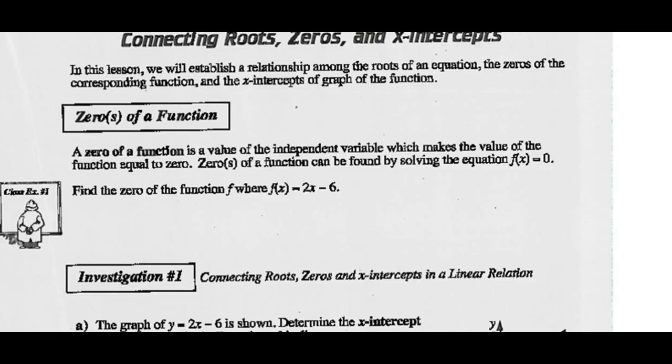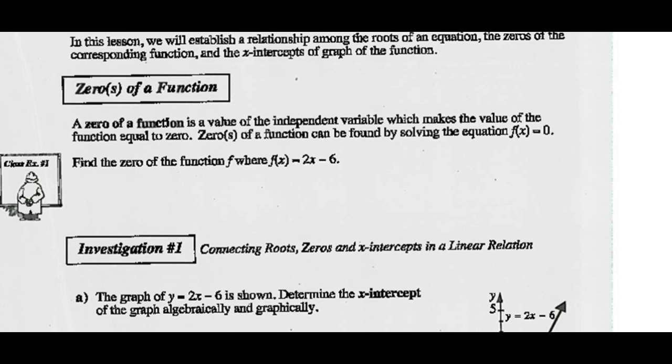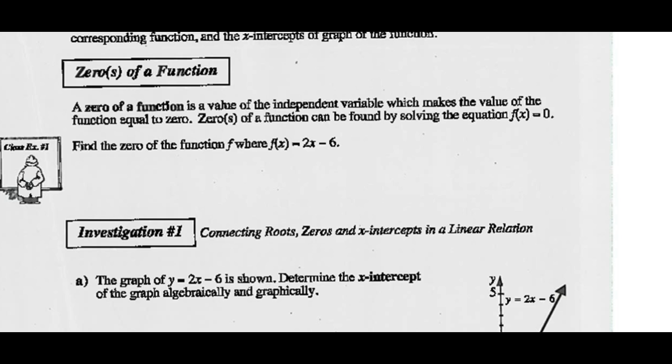So recall the zeros of a function. A zero of a function is the value of the independent variable which makes the value of the function equal to zero. Zeros of the function can be found by solving the equation f(x) = 0.